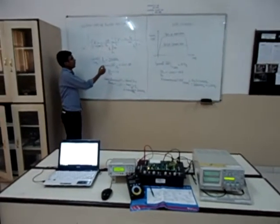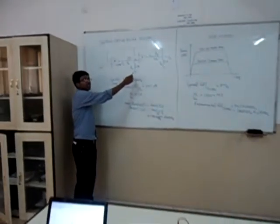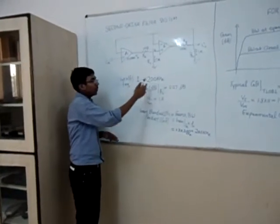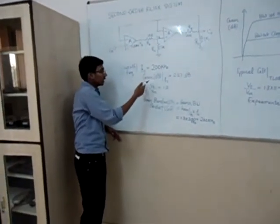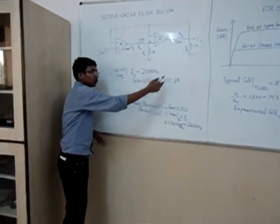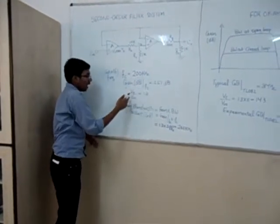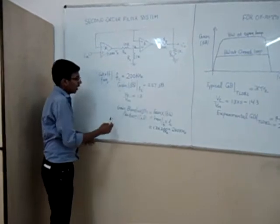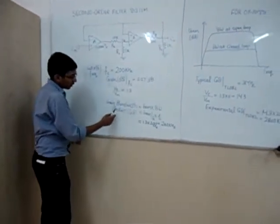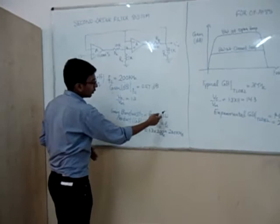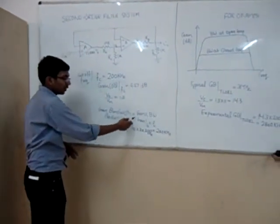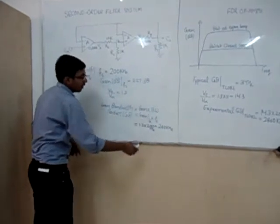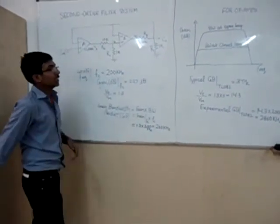Now coming to the major learning and actual challenge we face in this experiment. We have obtained the cutoff frequency equal to 200 kilohertz with gain in dB equal to 2.27 dB and voltage gain equal to 1.3. Now gain bandwidth product commonly known as GB equal to gain into bandwidth, also can be written as gain in axis into cutoff frequency which is equal to 260 kilohertz.